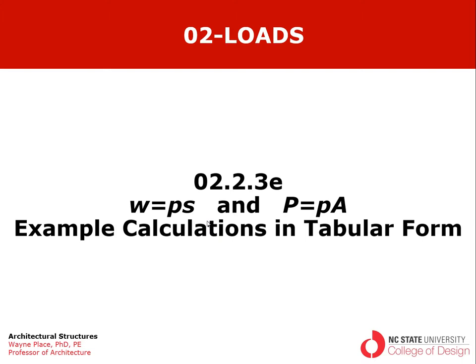We've also been talking about P equals lowercase p times A. Uppercase P is the total axial force associated with a certain area of floor that might be supported by a column. Lowercase p is an area distributed force in pounds per square foot, A represents the area of floor decking supported by the column — in square feet — and uppercase P is in pounds or kips.